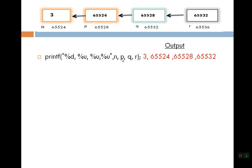The value of n is 3, the value of p is 65524, the value of q is 65528, and the value of r is 65532. This is printed here.